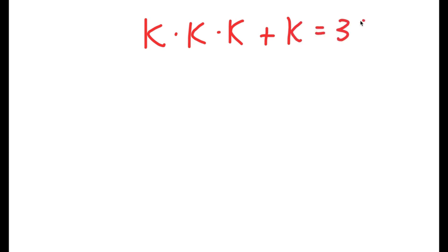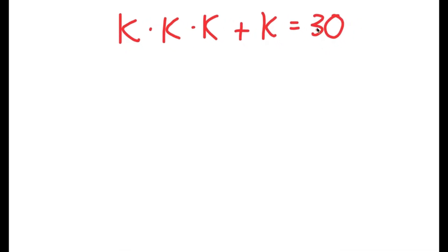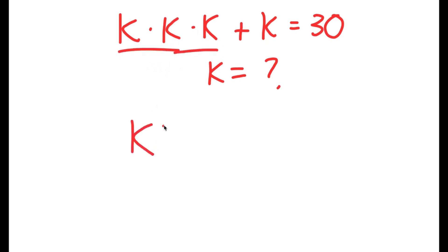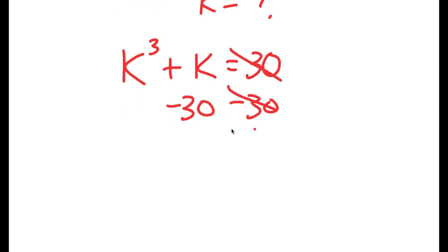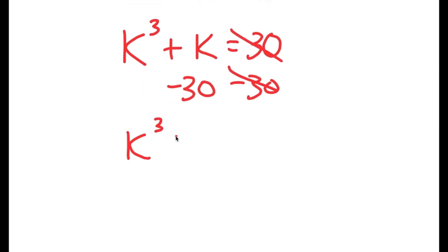In this video, I'm going to solve the equation k times k times k plus k is equal to 30. I want to find the value of k. To start off, k times k times k is the same thing as k to the power of 3. So k to the power of 3 plus k is equal to 30. Now I'm going to subtract 30 on both sides, so I get k to the power of 3 plus k minus 30 is equal to 0.